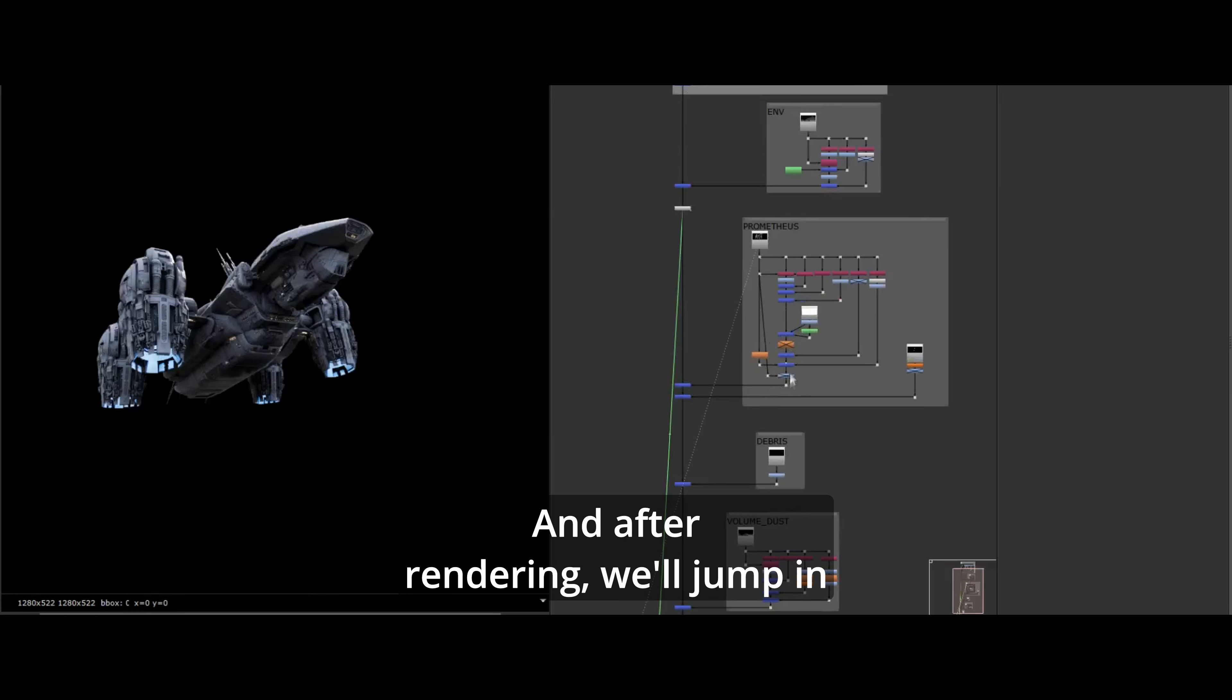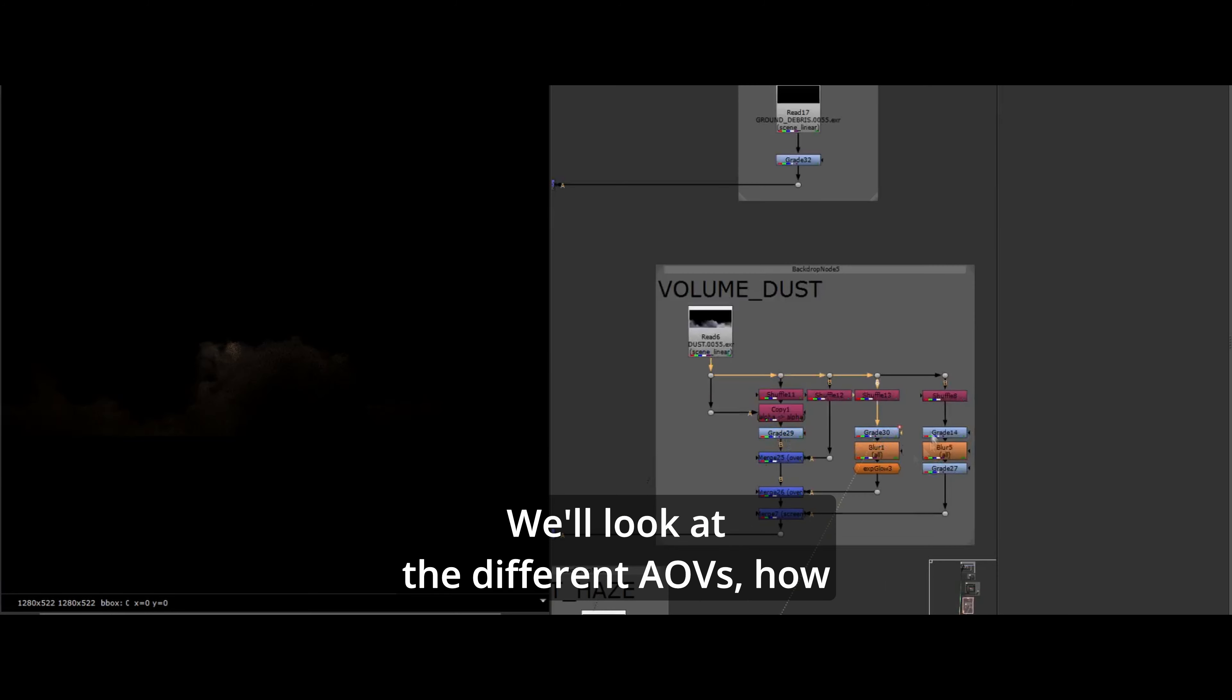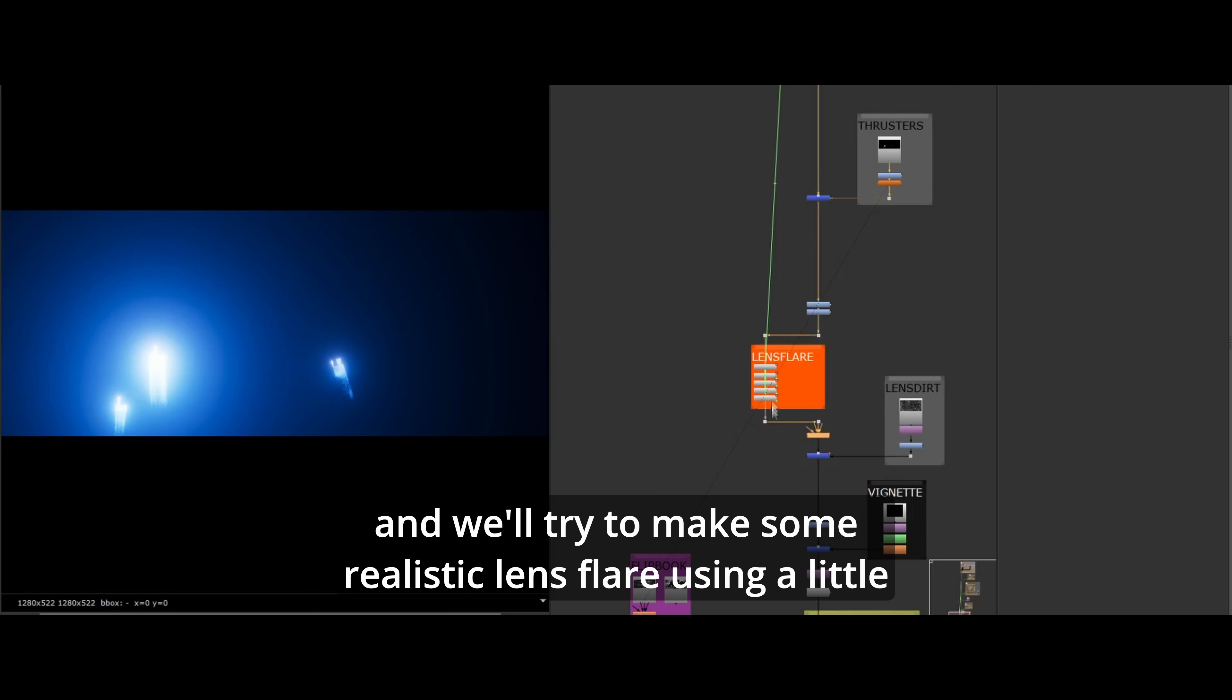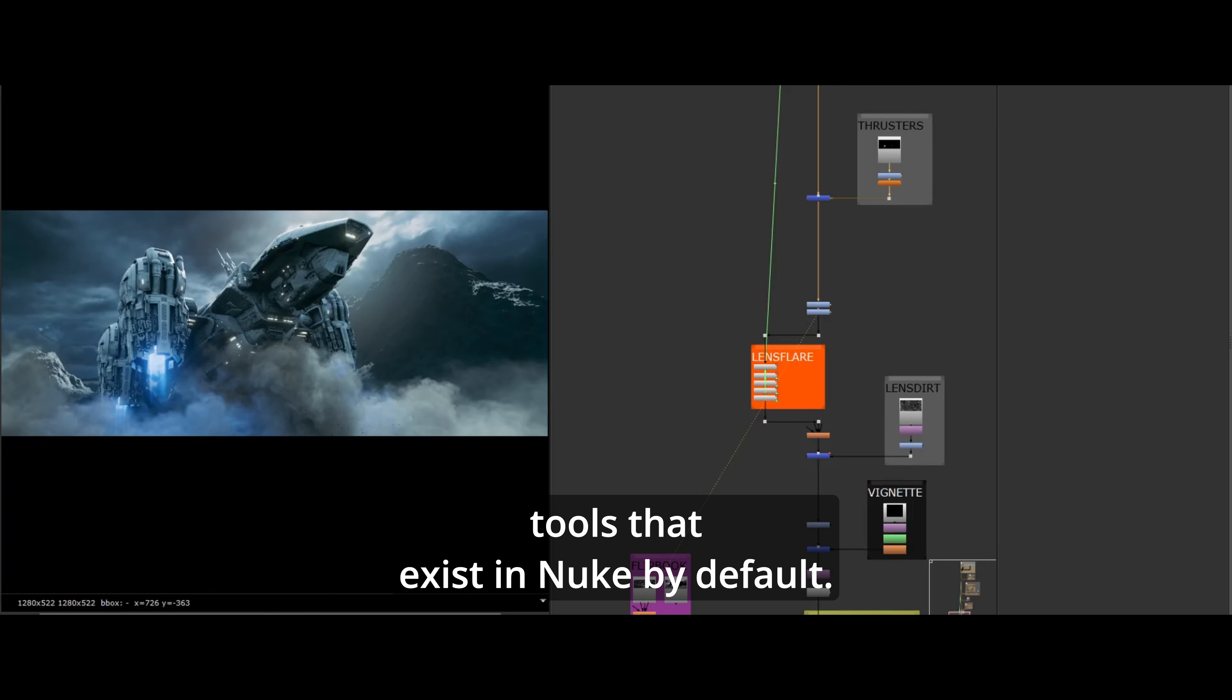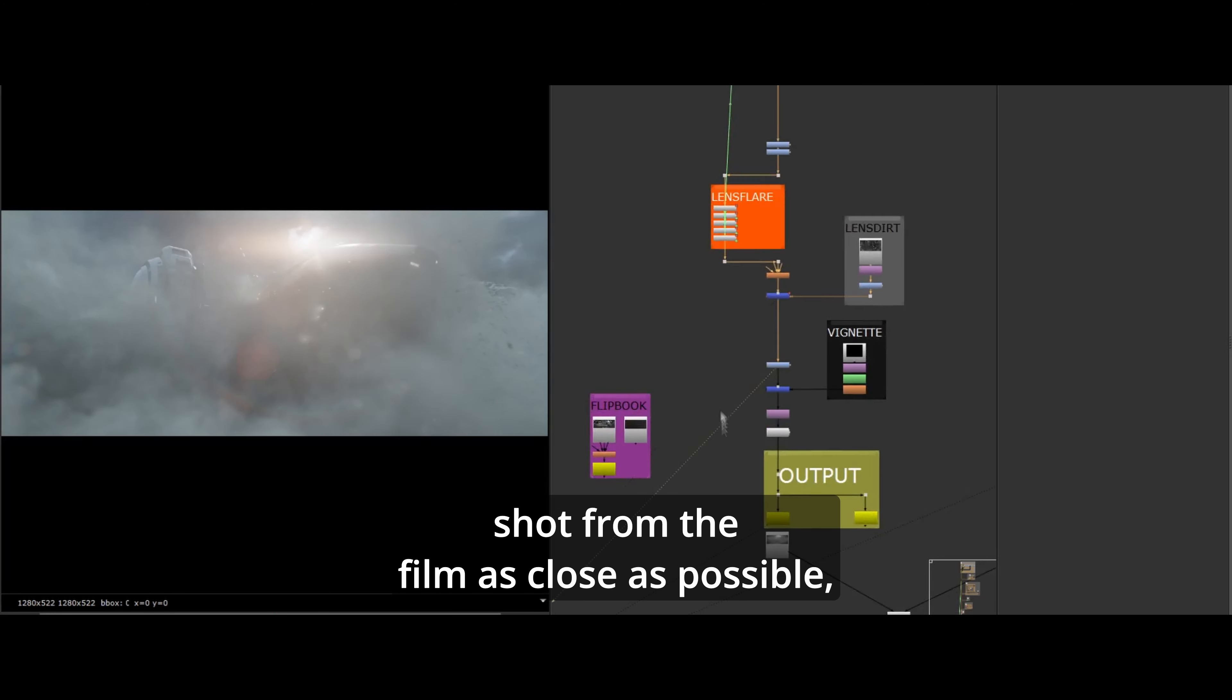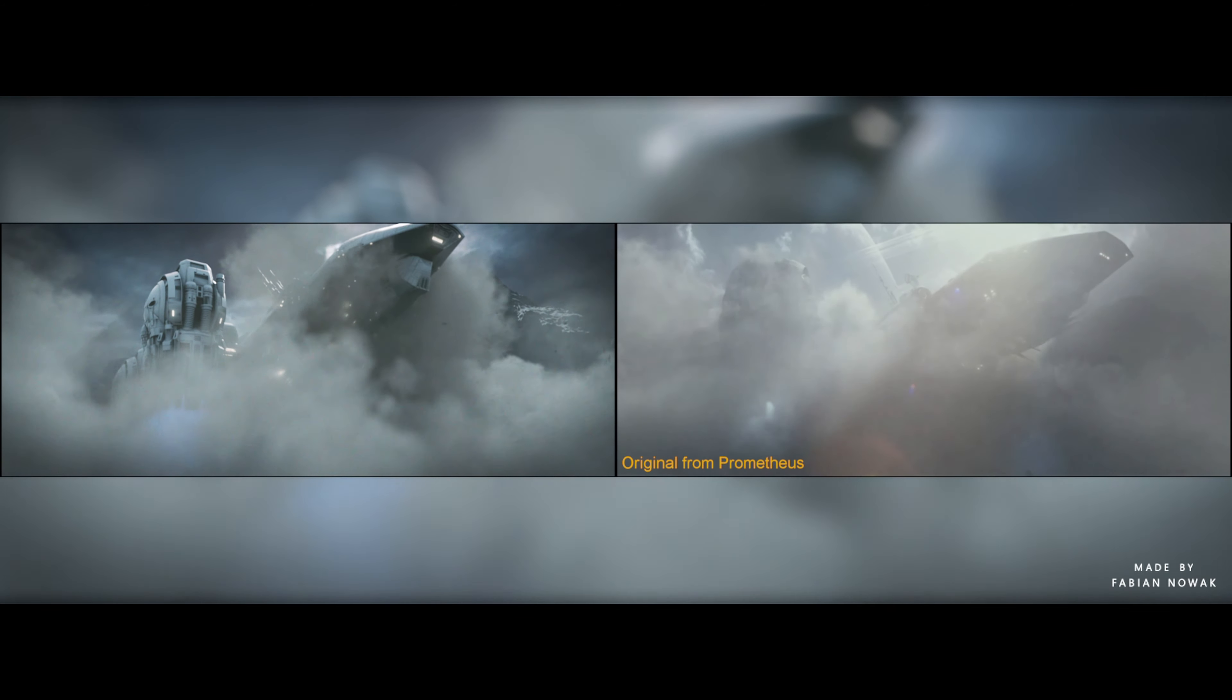And after rendering, we'll jump in Nuke and we'll comp everything together. We'll look at the different AOVs, how we can use them to improve each mass, and we'll try to make some realistic lens flare using only the tools that exist in Nuke by default. The idea will be to match the original shot from the film as close as possible, or at least to pay a tribute to the original one.